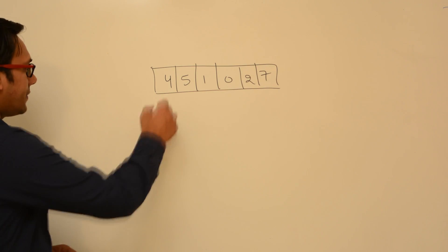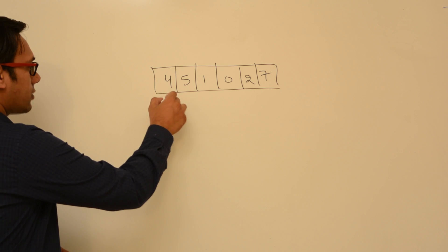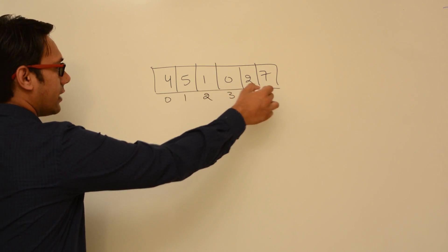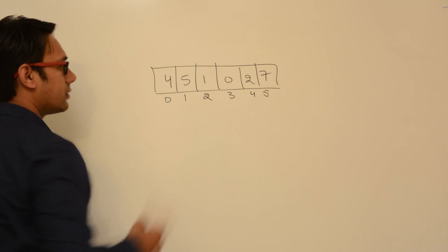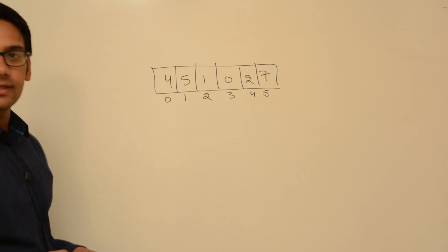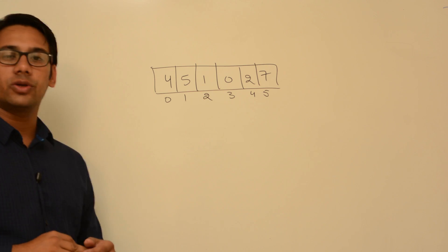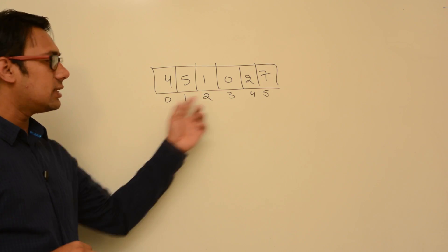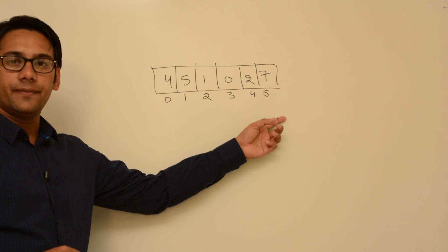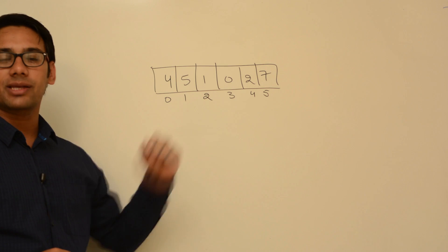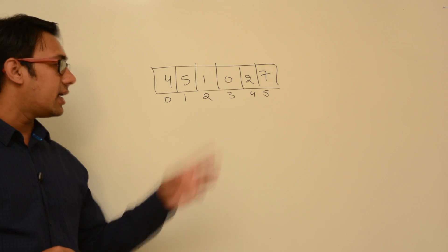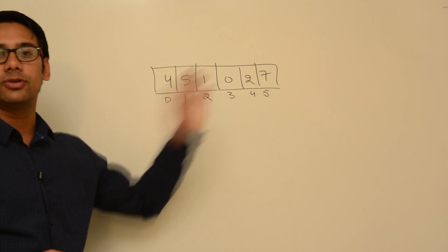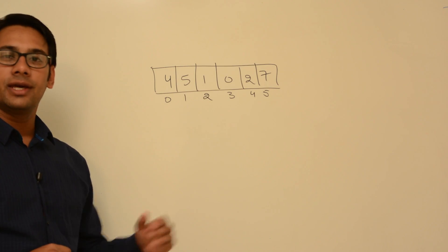In this data, these are the index locations: 0, 1, 2, 3, 4, and 5. So what is selection sort? In selection sort, what you are going to do is, in this complete data, initially you are going to find the maximum element and then put that maximum element to the last location.